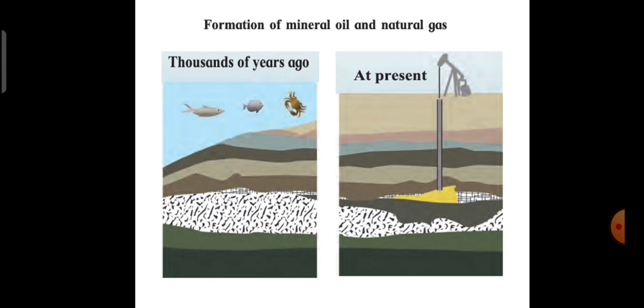Natural gas is carried over long distances by pipelines. In the absence of pipelines and safe transport, it is converted under pressure into compressed natural gas, that is CNG, and liquefied natural gas, that is LNG.